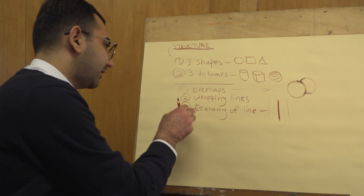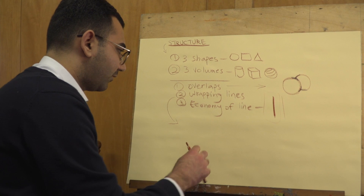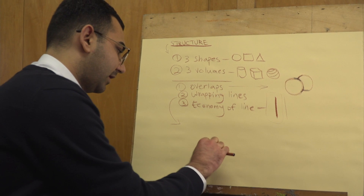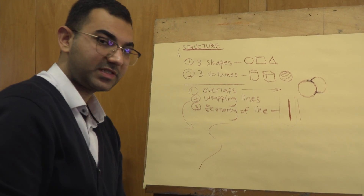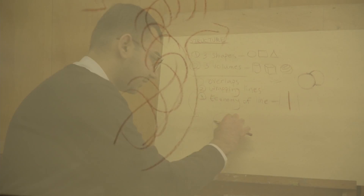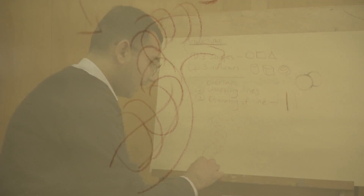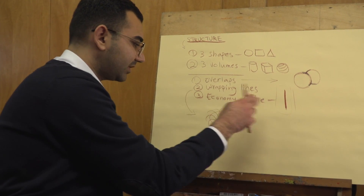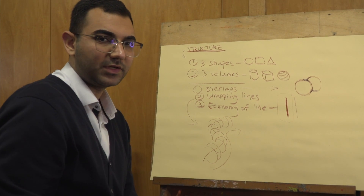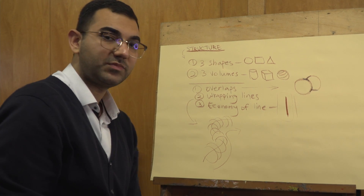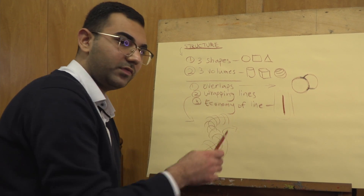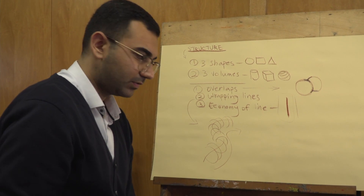Then we have wrapping lines. Wrapping lines try to show two things when you use them in your drawing. They show the movement of the volume in space — if I use different circles in different angles and directions, you can perceive the movement of all these shapes in space. Drawing and painting are the art of space; you have to show space and three-dimensionality. That's why you use overlaps, wrapping lines, and economy of line to give more depth to your drawings.